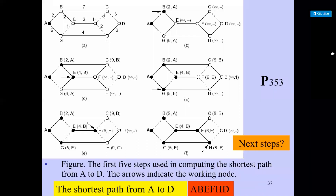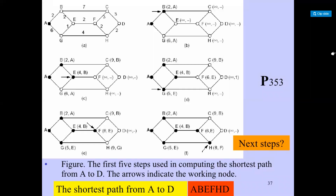Our journey starts from router A because A is the source node. Whatever the working node — in the second diagram the arrow mark is at B, in the third diagram the arrow mark is at E. The arrow mark represents the working node. In Dijkstra's algorithm, each node is labeled in parentheses with its distance from the source node along with the best known path.